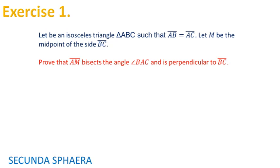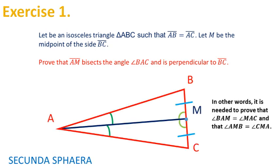Now it is time to start with the problems. I will follow the order as in the video that presented the problems. For the first problem, it states: let triangle ABC be an isosceles triangle such that the sides AB and AC are equal. Let M be the midpoint of the side BC, and we are asked to prove that the segment AM bisects the angle BAC and is perpendicular to the side BC.